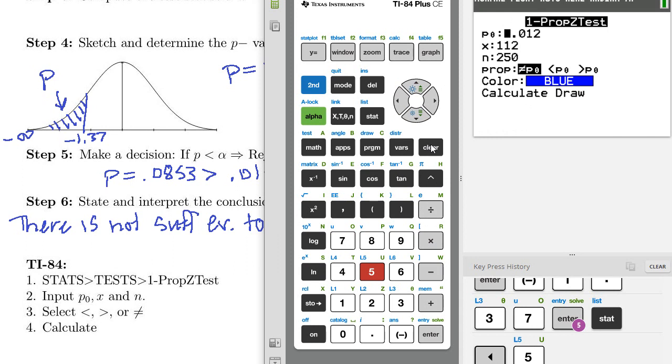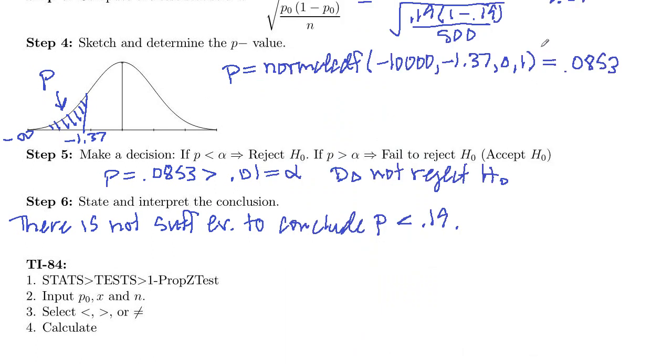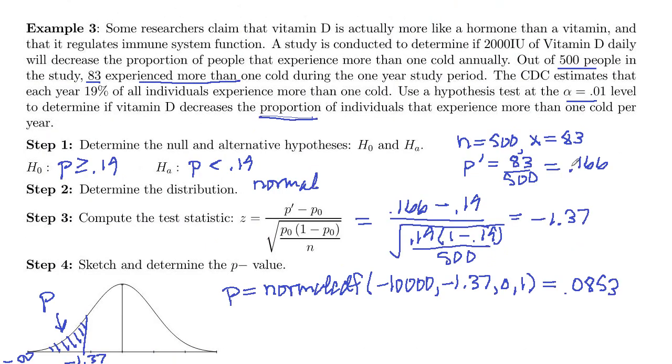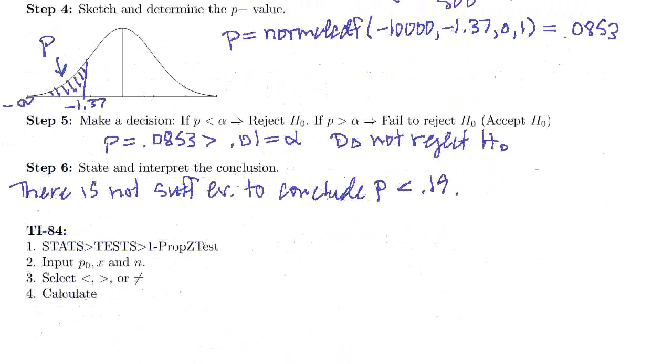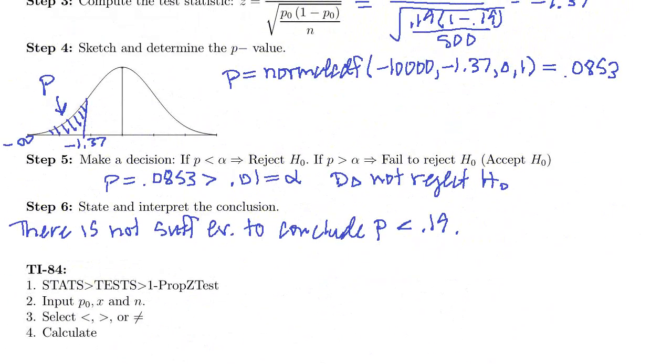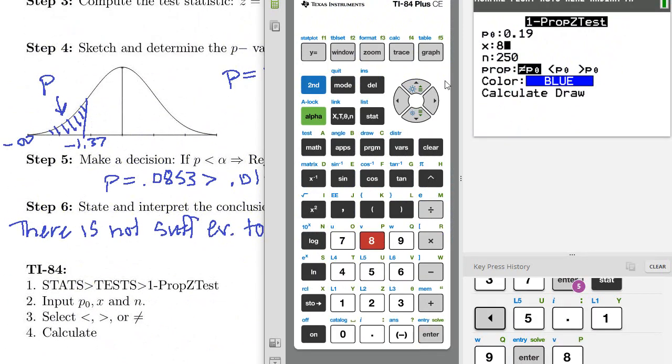And so let's see, we're testing against 0.19. That's our p_0. Our successes here were 83 out of 500. So x is 83, n is 500.